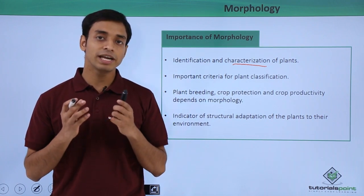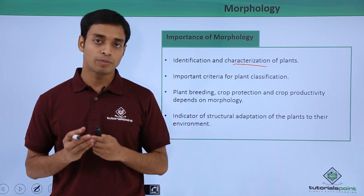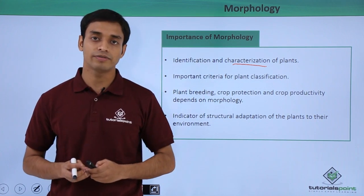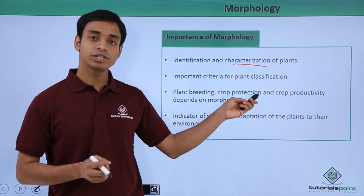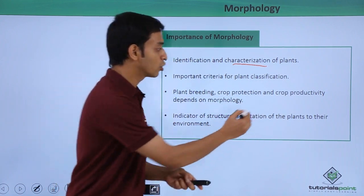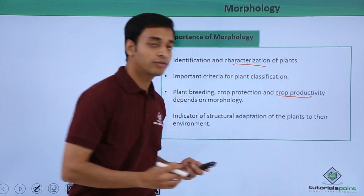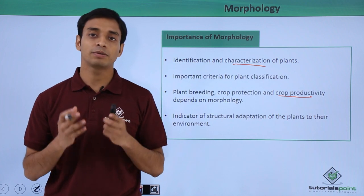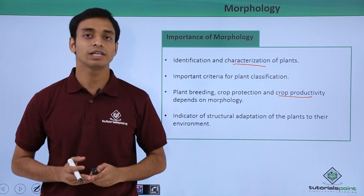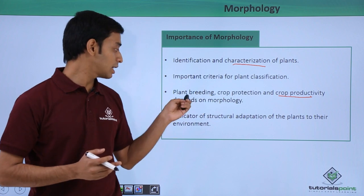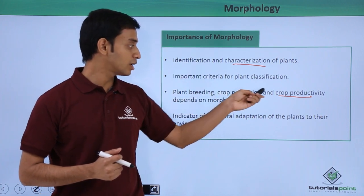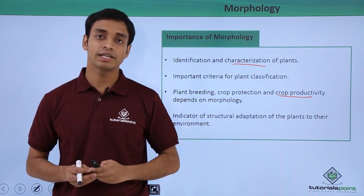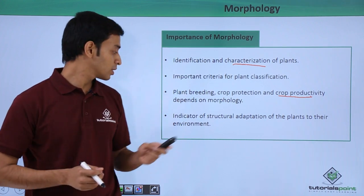Morphology also helps in crop protection. Because of the study of morphological features, we have been able to develop crops that are protected from different pests, organisms, and diseases. Morphological study has also helped in increasing crop productivity, as the yield of particular crops has been improved through the study of morphological characteristics.